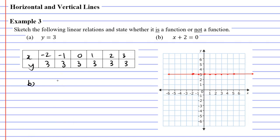You can see that we're going to get a horizontal line which passes through the point where y equals 3. Let's now look at question b. We are told that x plus 2 equals 0. I just need to do a little bit of rearranging.